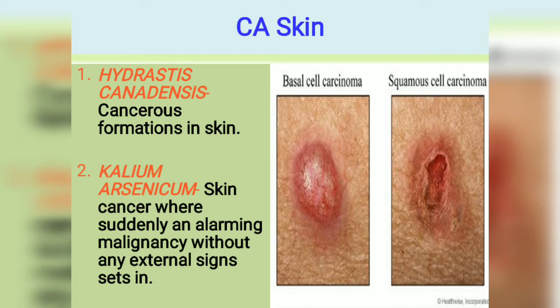Calcarea Arsenicum — skin cancer where suddenly an alarming malignancy without any external signs sets in. If you see such malignancy, it is Calcarea, most commonly for basal cell carcinoma. So you can use Calcarea Arsenicum.